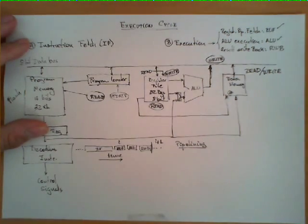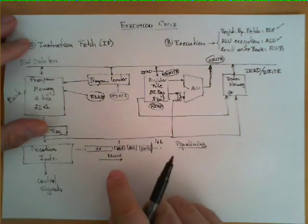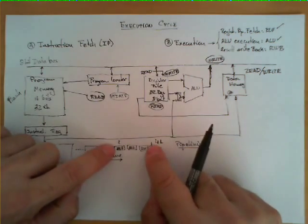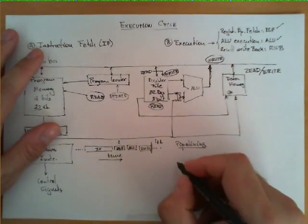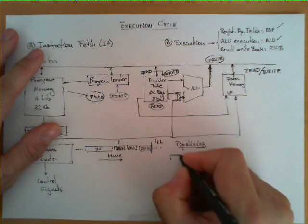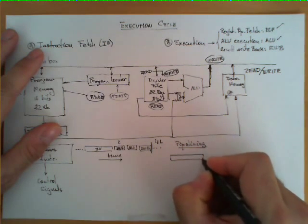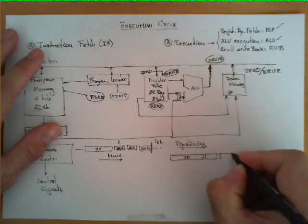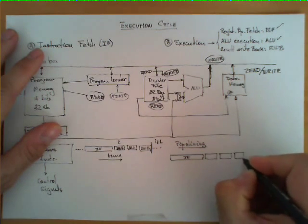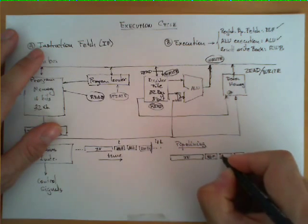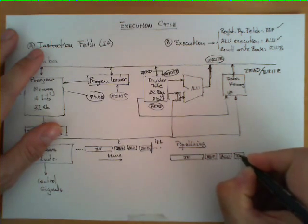We are going to illustrate pipelining with this architecture by dividing the execution cycle into two blocks: the instruction fetch and the other three phases, then executing them in parallel. When we are executing the instruction fetch of one instruction, we then have the three phases ROF, ALU, and RWB.